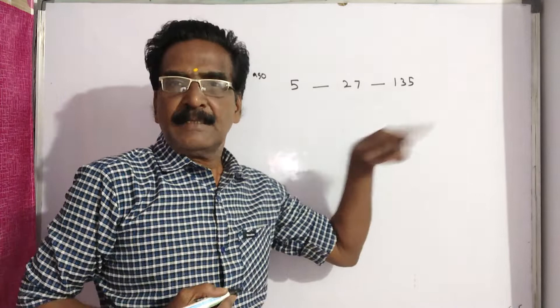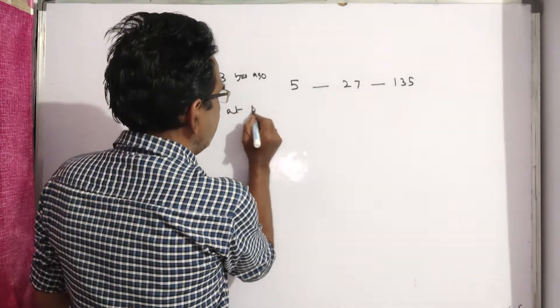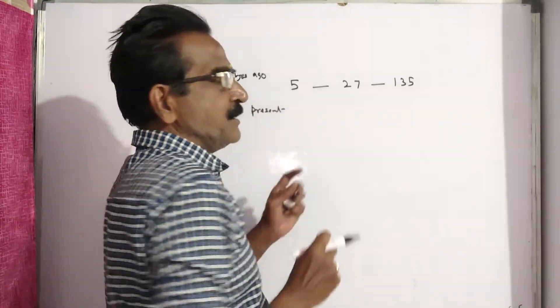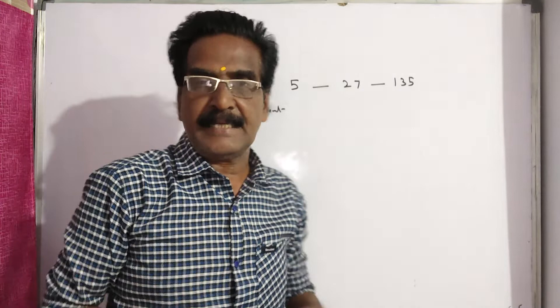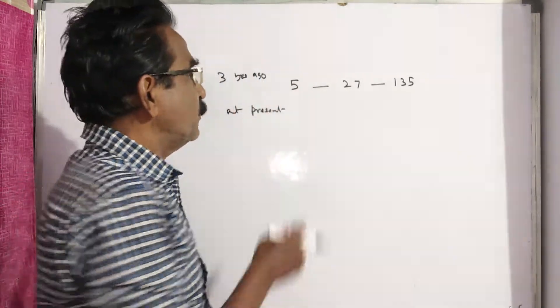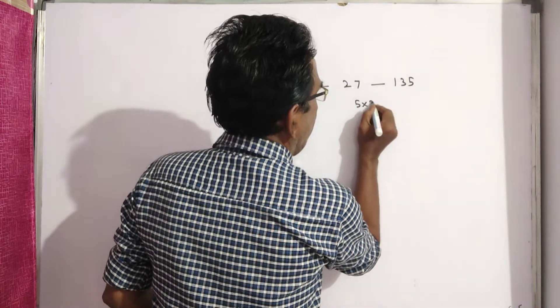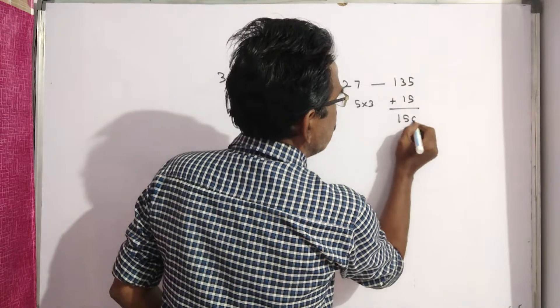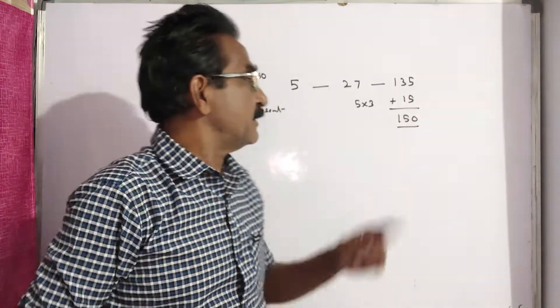This sum is three years ago. So what is the present sum? At present, each member grows by three years. Here, five members are there. So you have to add 5 into 3, plus 15. Now at present, the sum of all five members is 150.